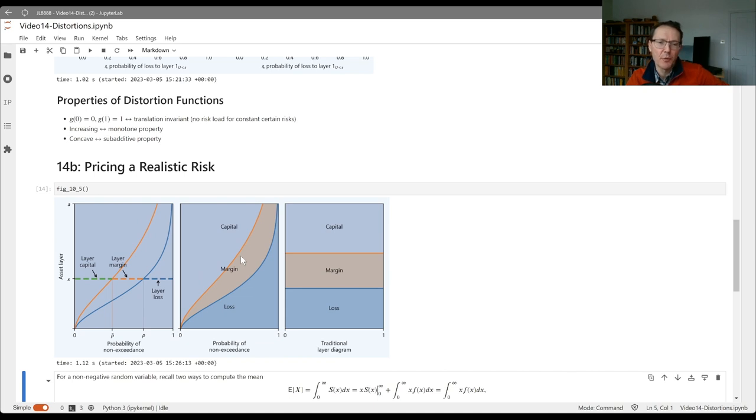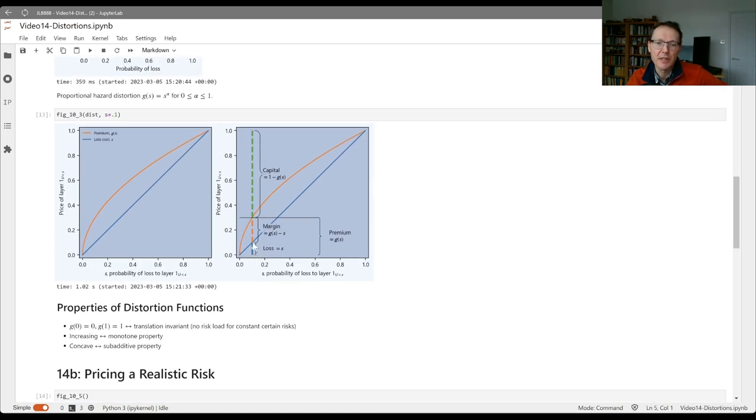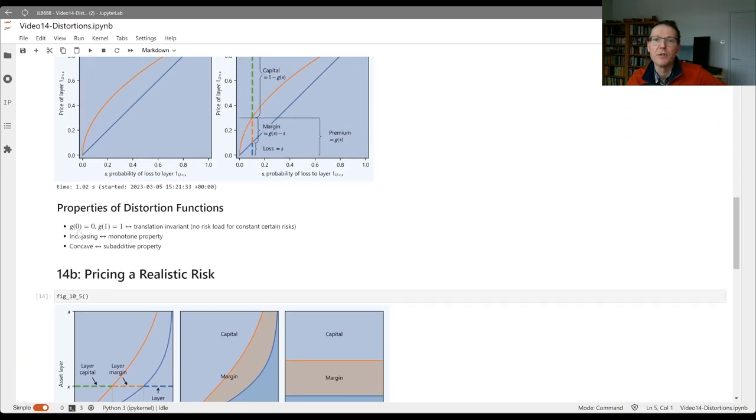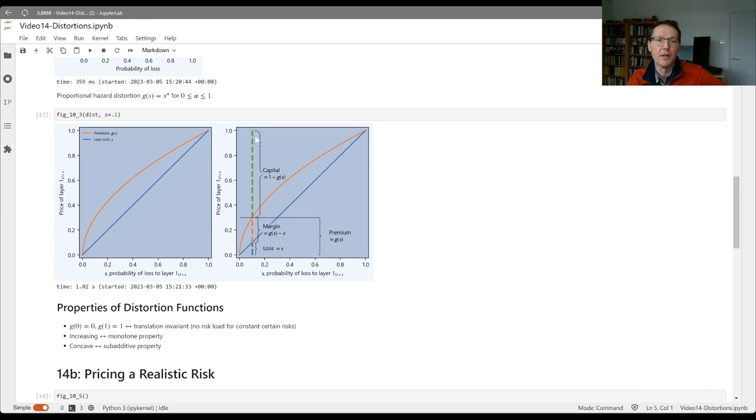The distortion function acts to increase these probabilities. The orange line here is going to increase our 0.1 up to 0.3, measured from the right. We're going to have a certain amount of margin that gets included, and as a result we're going to have a premium that we would charge just for this individual layer. Since the only sources of assets are premium and capital, the remaining amount, this green line here, has to be the capital that's provided, analogous to the capital from G of s up to 1 that we had previously.